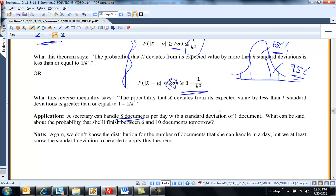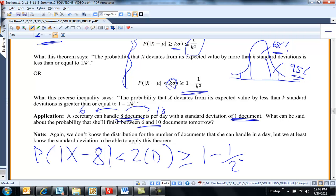A secretary can handle 8 documents per day with a standard deviation of one document. What can be said about the probability she'll finish between 6 and 10 documents tomorrow? That is really 8, with two standard deviations to the left and two standard deviations to the right. We're answering what's the probability that the number of documents she'll finish, with mean 8, is within 2 times 1, within two standard deviations. That's greater than or equal to 1 minus 1 over K squared, K is 2. So that's equal to three-fourths. Again, if I knew the distribution, I could find out exactly, but this is just an estimate.